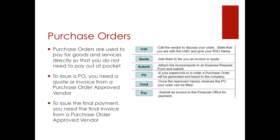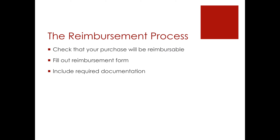We cannot issue payment without a final invoice. The last major payment type is probably the most common, and it is the reimbursement process. There are three main areas that you need to be aware of when doing a reimbursement. First, you need to check that your purchase is actually reimbursable. Next, you need to fill out the purchase request form. Lastly, you need to include the required documentation.